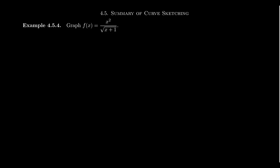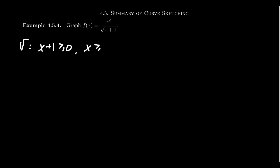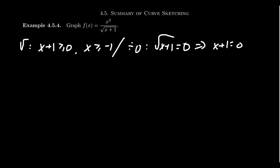Starting with the domain, the issues will come from the denominator because we don't want to divide by zero, and we also don't want to take the square root of a negative. For the square root issue, we need x plus 1 to be greater than or equal to 0, which means x must be greater than or equal to negative 1. But we also can't divide by zero — the square root of x plus 1 equals zero when x plus 1 equals 0, so when x equals negative 1.